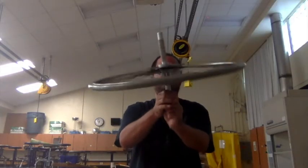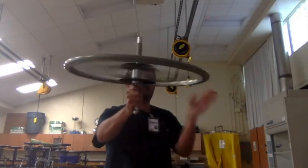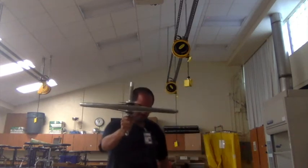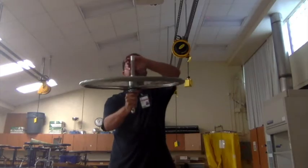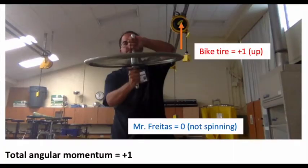So here, all of the angular momentum is in the bike tire, and the angular momentum vector is pointed upwards. At this moment, I'm on the platform and the bike tire is spinning. So the bike tire has angular momentum. Its vector is pointed upwards. It's plus one.